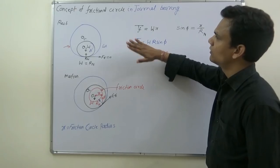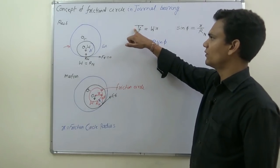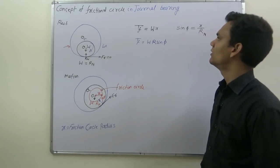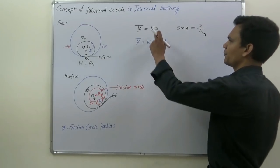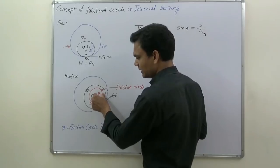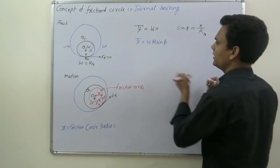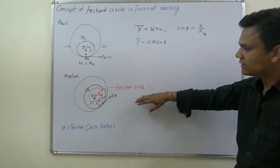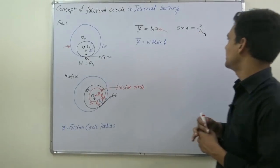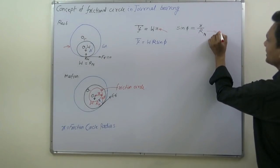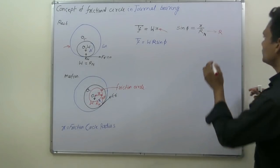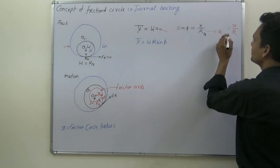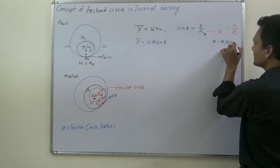To calculate frictional torque and power loss for the friction circle, we start with: frictional torque T_f = load × perpendicular distance, since torque equals force times perpendicular distance. To find x (the friction circle radius) in terms of sin φ: sin φ = x / Rn. For simplification, I write Rn as R, so sin φ = x / R, which gives x = R sin φ.